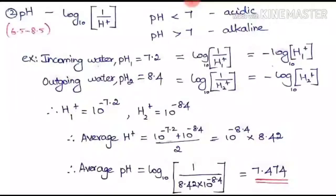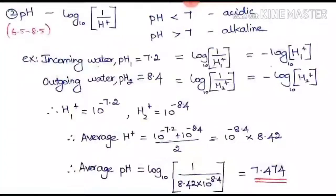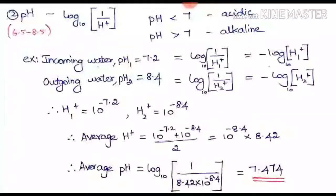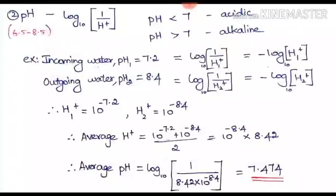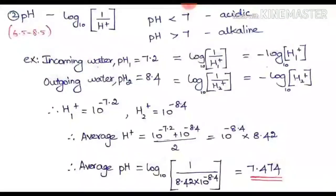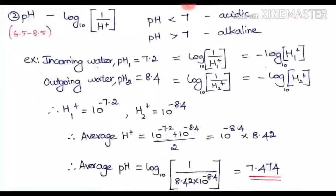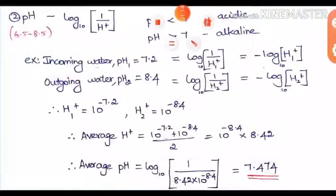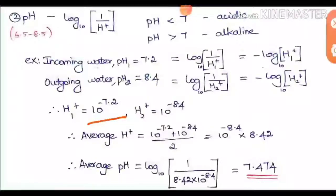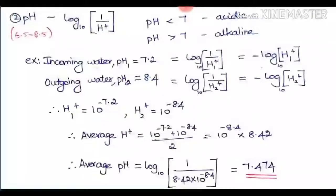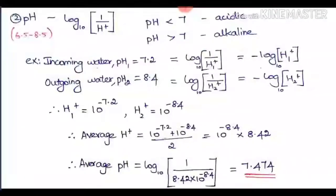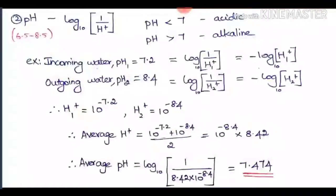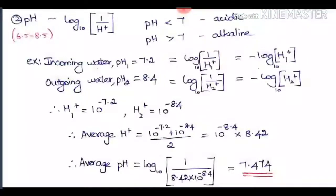Here is an example that may appear in competitive exams: incoming water in a treatment plant has a pH of 7.2 and outgoing water has a pH of 8.4. Find the average pH. First, find the average H+ ion concentration. H1+ = 10^(-7.2) and H2+ = 10^(-8.4). Averaging these gives 8.42 × 10^(-8.4). Taking the negative logarithm of the average H+ value gives an average pH of 7.4 for that treatment plant.